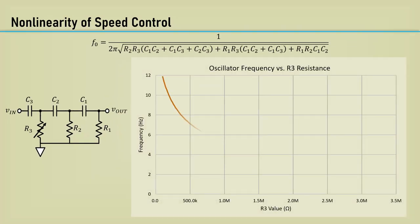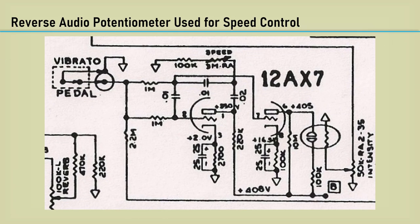I plotted the oscillator frequency versus the varying resistance of R3, which is very non-linear. It has a 1 over the square root of X shape.